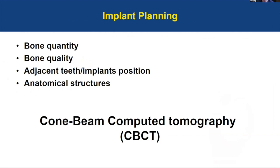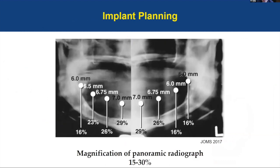To reach good osseointegration, we need to perform a thorough clinical and radiographic examination. CBCT imaging is ideal for pre-assessment — not only for bone quantity and quality, but also to determine the position of adjacent teeth or anatomical structures surrounding the future implant. Other radiographic images commonly used in dental practice, such as the panoramic radiograph, are not very accurate. They can have a magnification of between 15 to 30 percent that varies from site to site, so there is distortion and it's not accurate for implant placement.